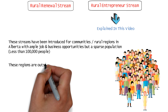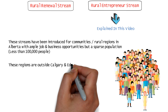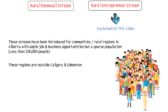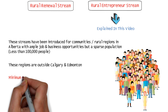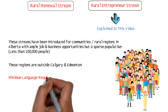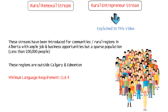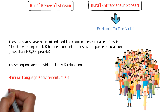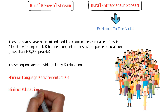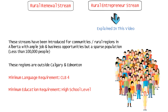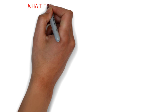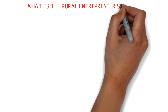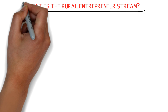These regions are outside the metropolitan areas of Calgary and Edmonton. Language requirements are still low at just CLB4, and the education required is also low at just the high school education level. Let me first start with what the Rural Entrepreneur Stream actually is.